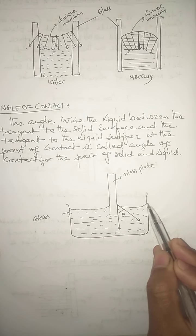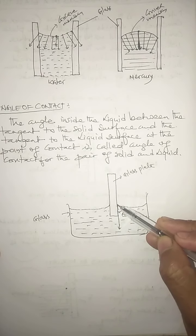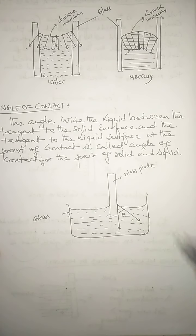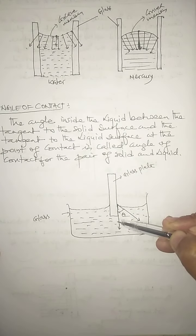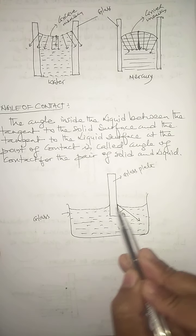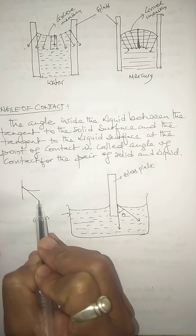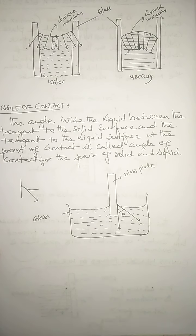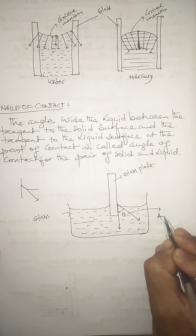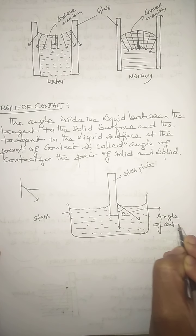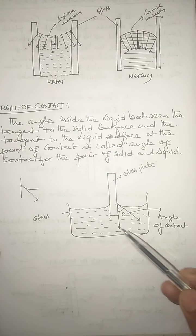At the point of contact, the curved surface is formed due to cohesive and adhesive forces. The tangent to the solid surface and the tangent to the liquid surface form a certain angle between them, and this angle is called the angle of contact, marked by theta. Because of the concave meniscus, these two tangents form a specific angle that we measure inside the liquid.